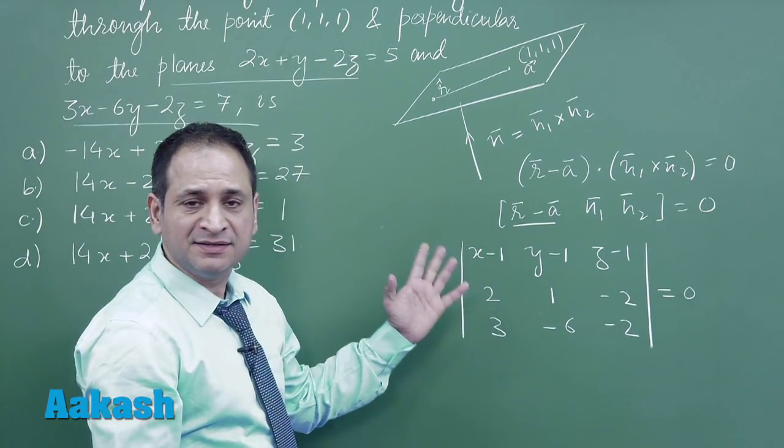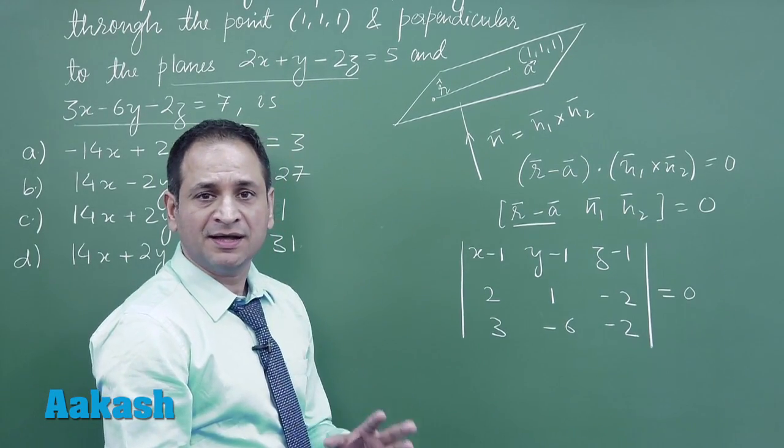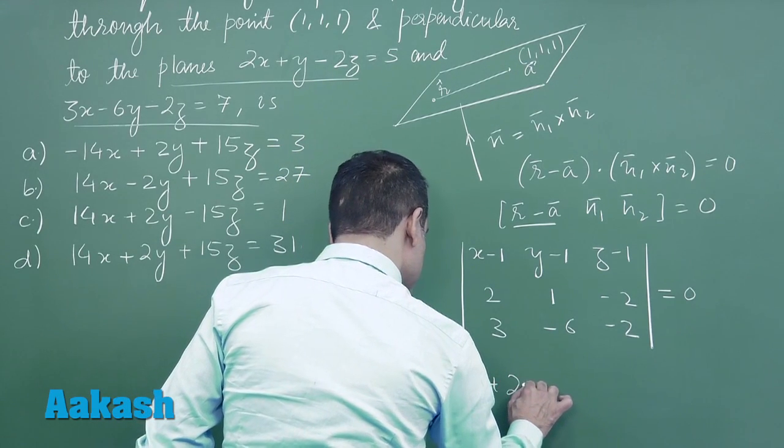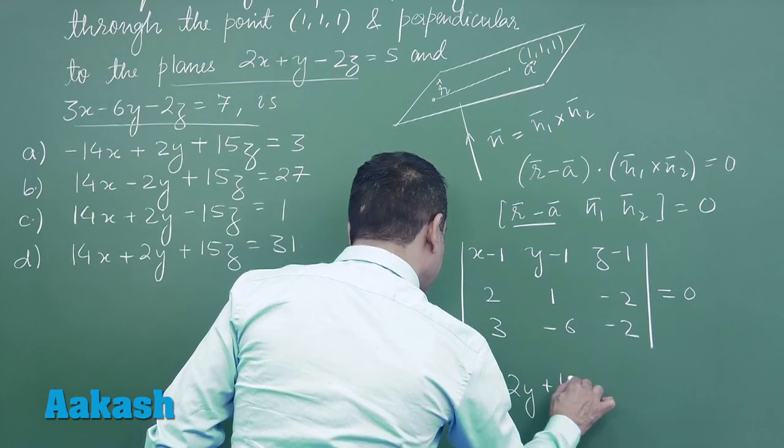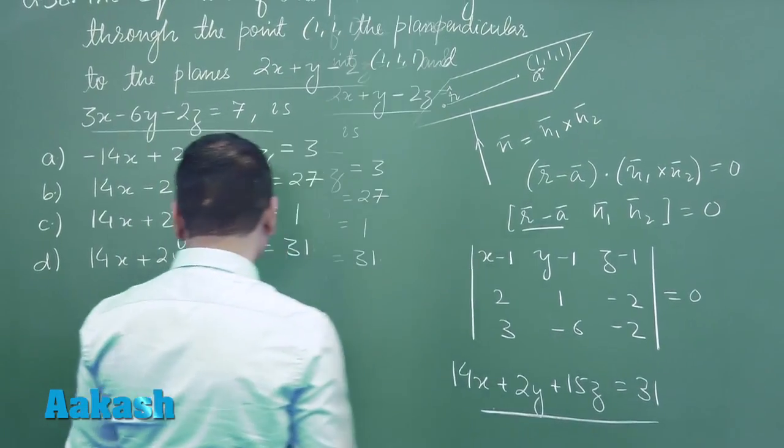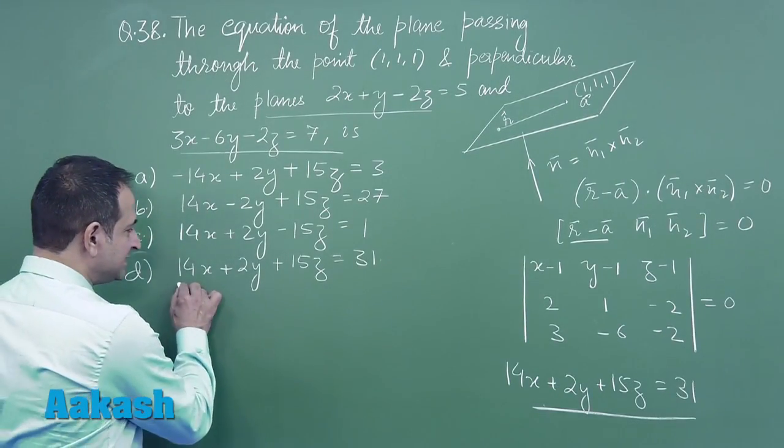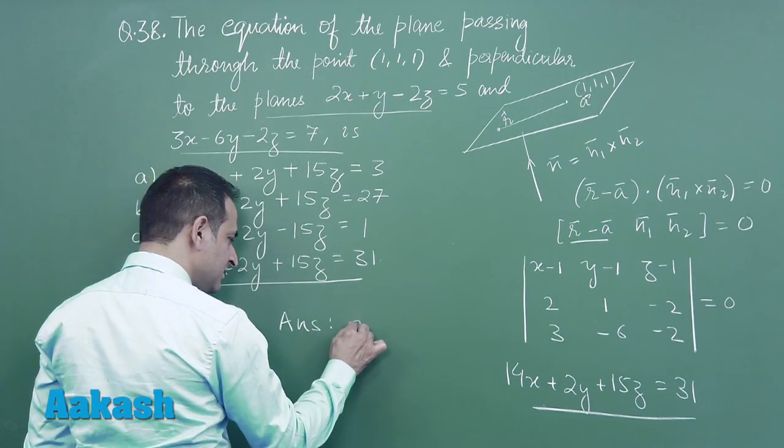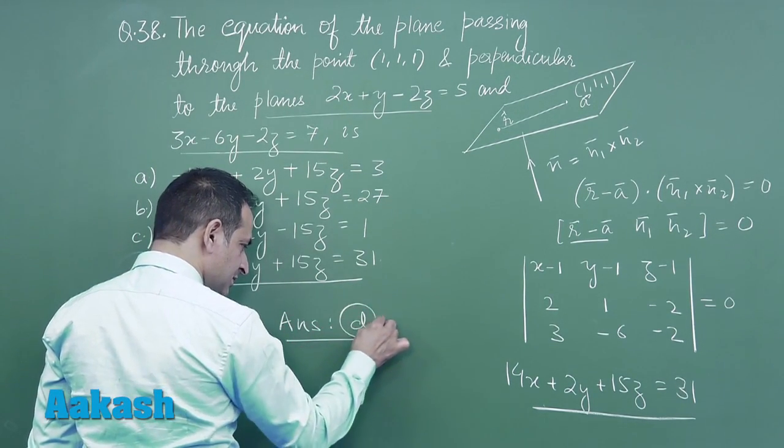If you expand this determinant, the correct answer will be 14x plus 2y plus 15z is equal to 31. So you can see d is the correct answer. So we have the answer of this option, that is d.